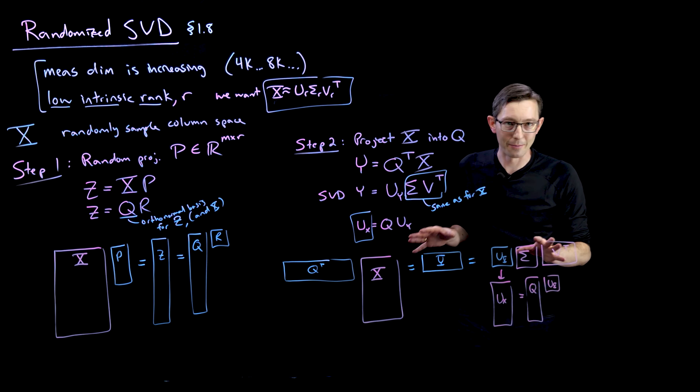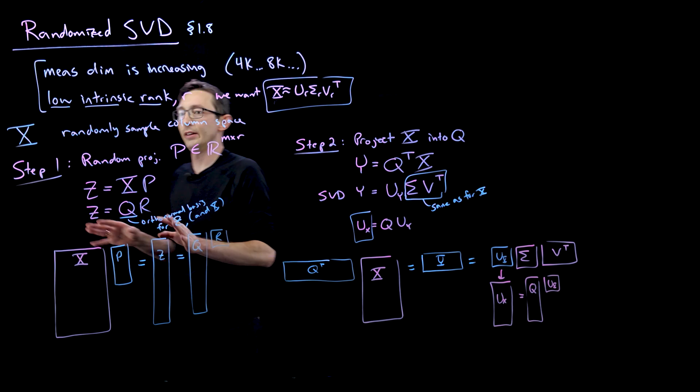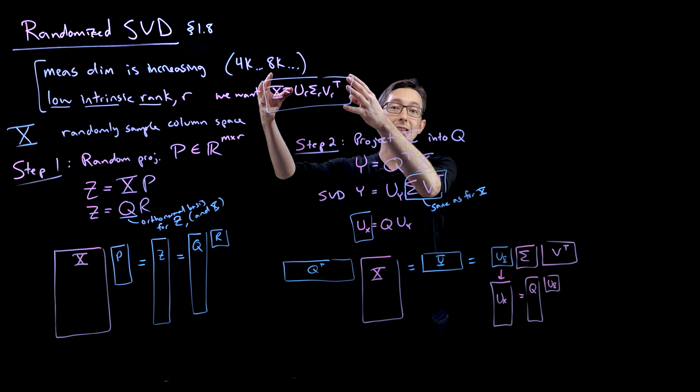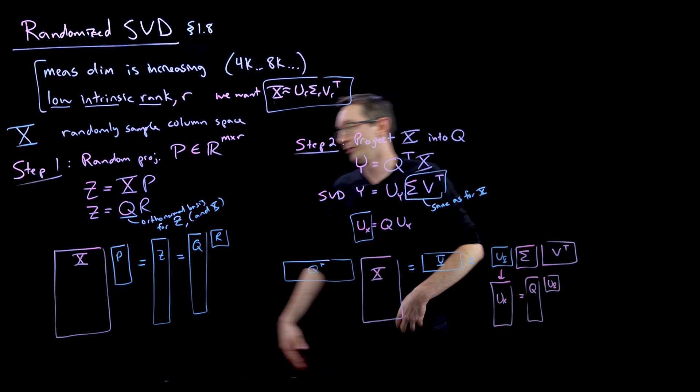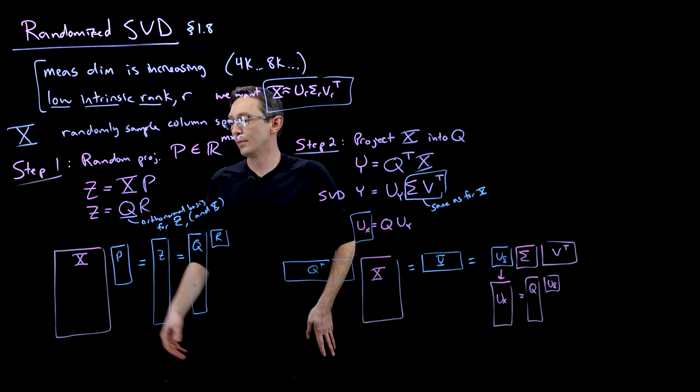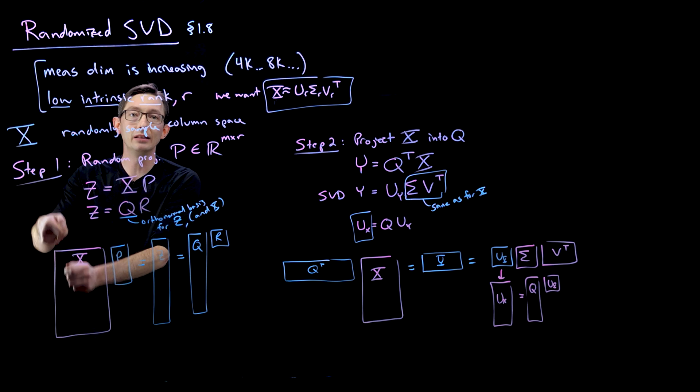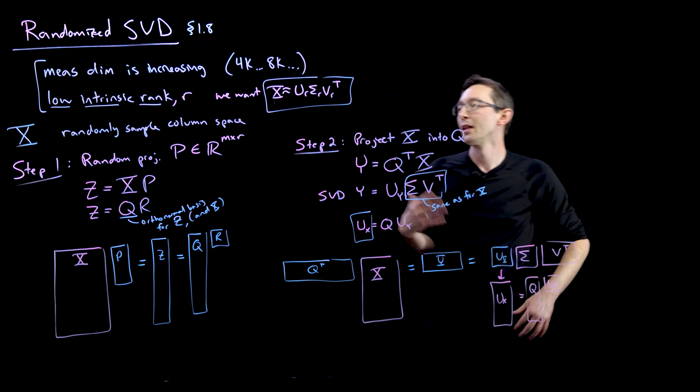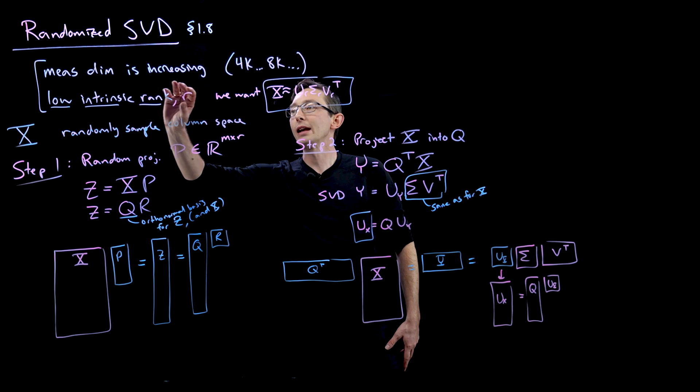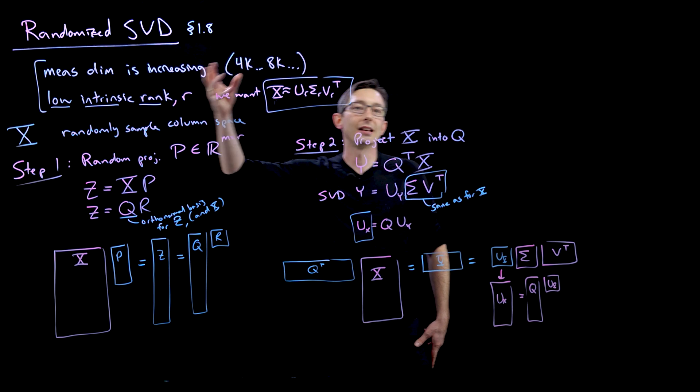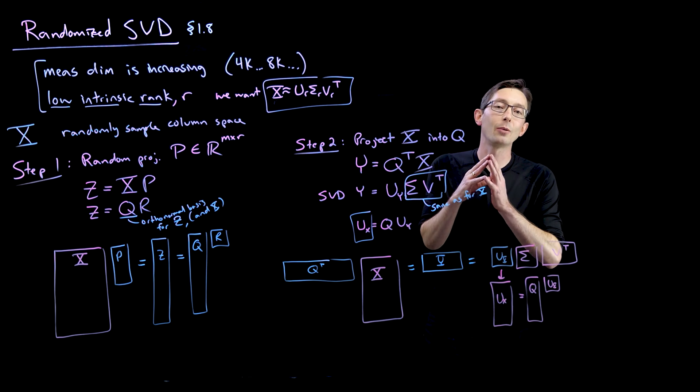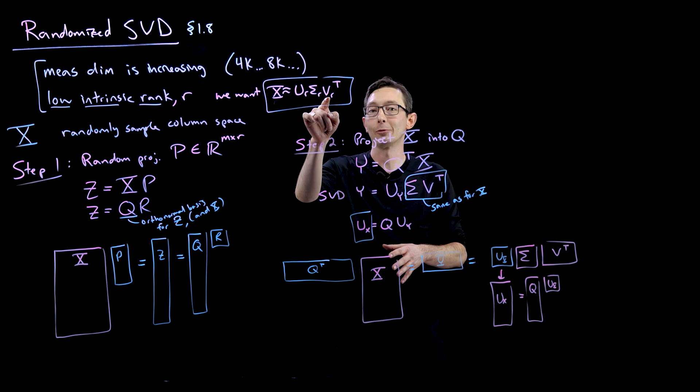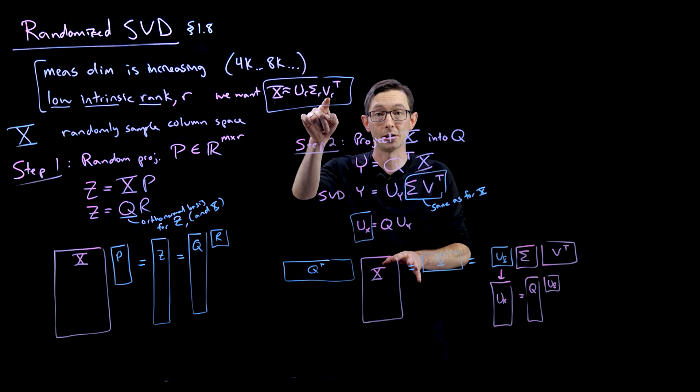Let's just do a recap. That's a lot of math for a 10-minute video. So the recap here is that computing the SVD of a big matrix X is very expensive. If I have a billion column, if each column is a billion dimensional, and I have a million of those columns, this is a massive, massive matrix. But if I believe that there's low rank structure in there of rank R, let's say R is 10 or 100,